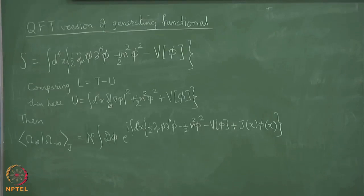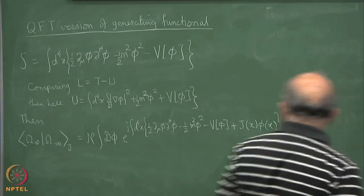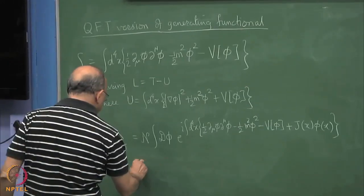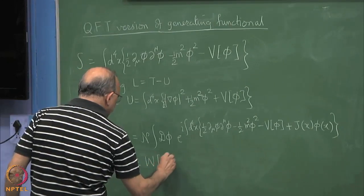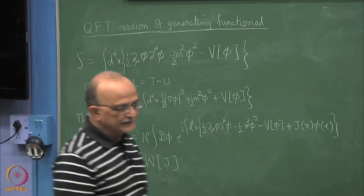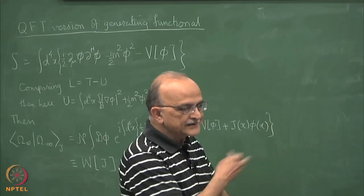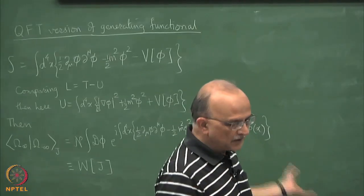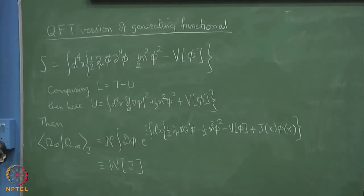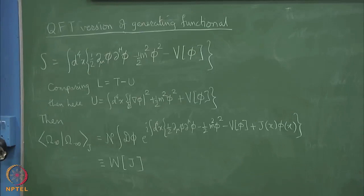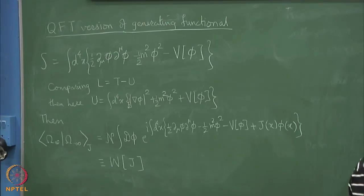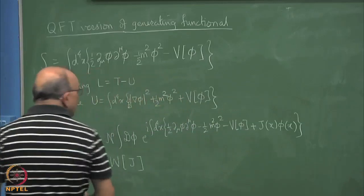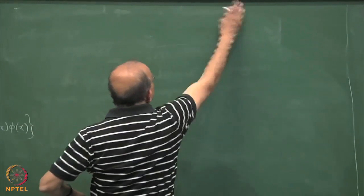We now say that this expression we refer to as w(j). Some warning: if you read Itzykson and Zuber, then the w and the z are exchanged. Itzykson and Zuber call this the z and the log of it w, and I think Greiner's book also does that. Somehow Ramamurti used the wrong notation, but once I am reading that book I cannot change the notation. Anyway, it is a matter of symbols.